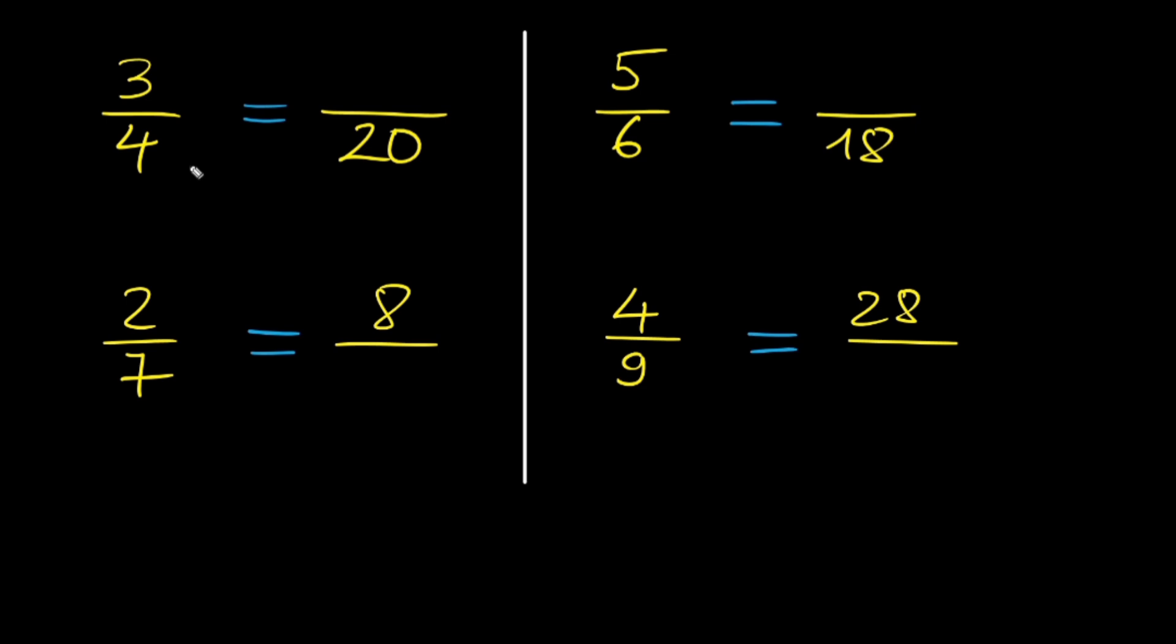So how do we go about finding it? Four times what number will give us 20? Or in other words, 20 divided by 4 is equal to what? 20 divided by 4 is 5. So to get to 20 from 4, we need to multiply by 5.